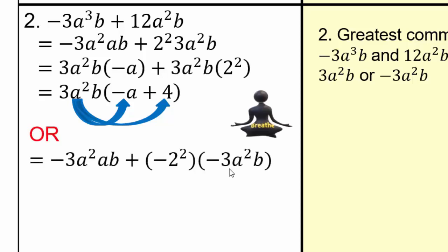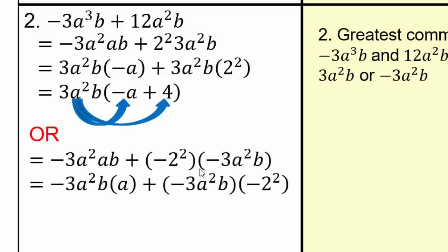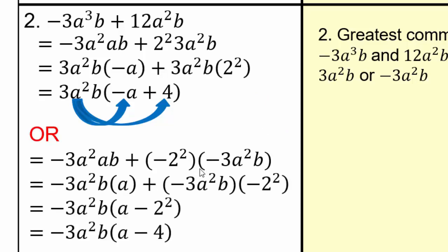We could also pull out a negative 3a squared b, but then the positive 12 would have to be written as negative times negative makes it positive. So our answer would be negative 3a squared b times a minus 4. Negative 3a squared b times a gives negative 3a cubed b, and negative 3 times negative 4 gives positive 12a squared b. So either answer is acceptable.